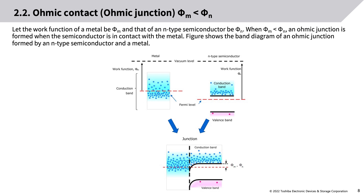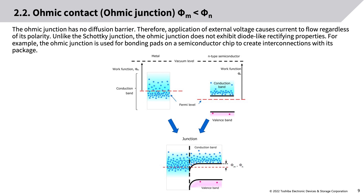The figure shows the band diagram of an ohmic junction formed by an N-type semiconductor and a metal. The ohmic junction has no diffusion barrier. Therefore, application of external voltage causes current to flow regardless of its polarity. Unlike the Schottky junction, the ohmic junction does not exhibit diode-like rectifying properties. For example, the ohmic junction is used for bonding pads on a semiconductor chip to create interconnections with its package.